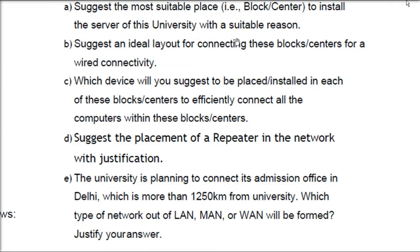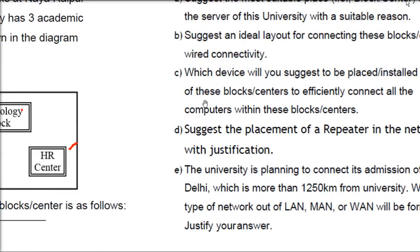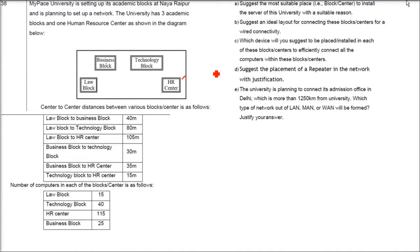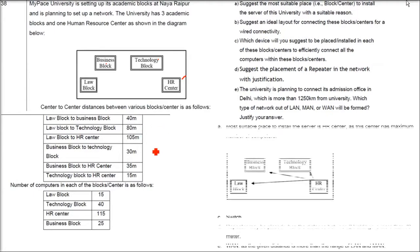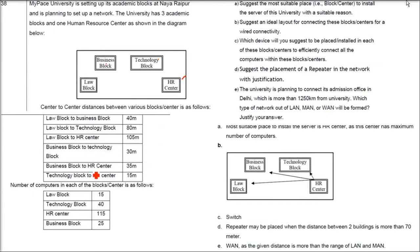The first question asks us to suggest the most suitable place to install the server. A server is a powerful computer that administrates all other systems on the network. Since the HR center has the highest number of computers, and higher distance causes higher attenuation, HR center is the most suitable place.